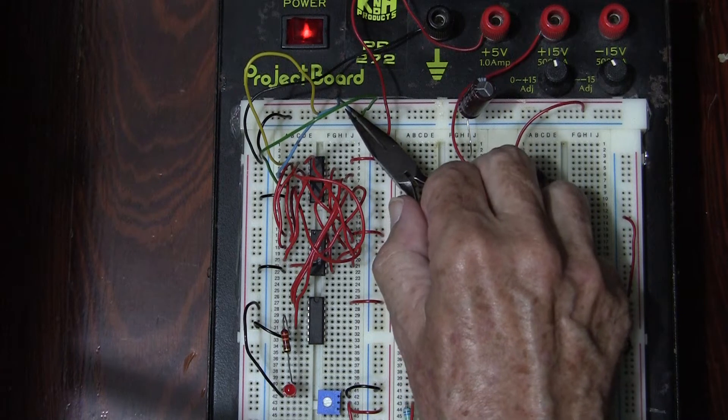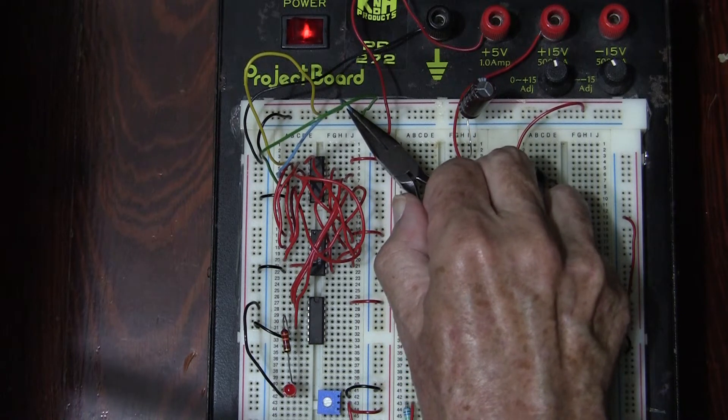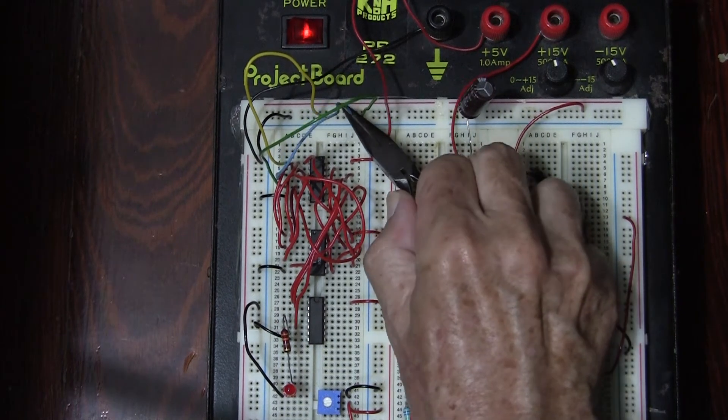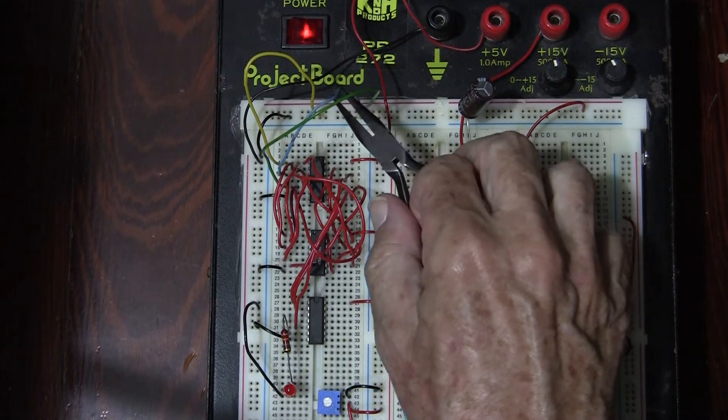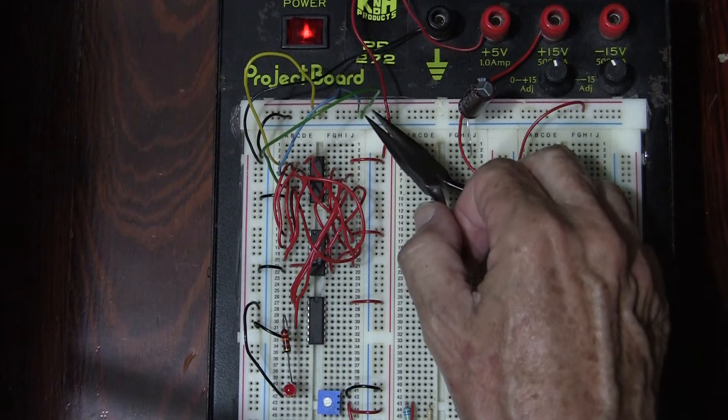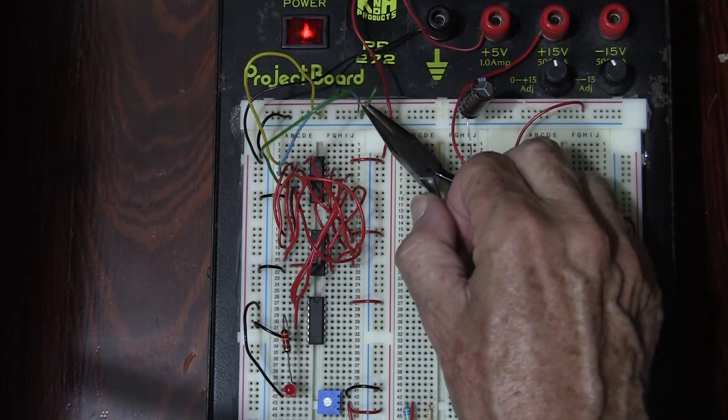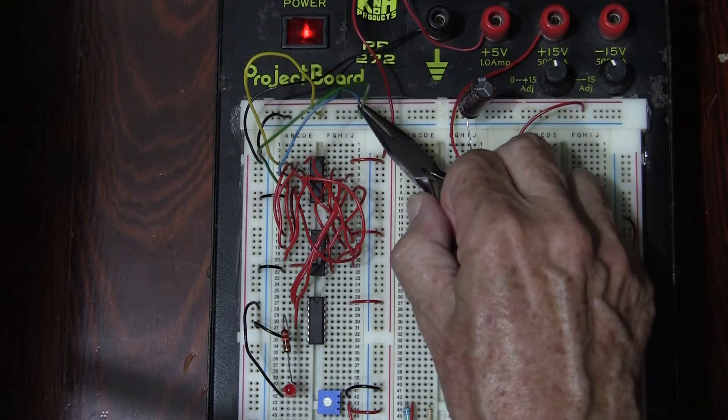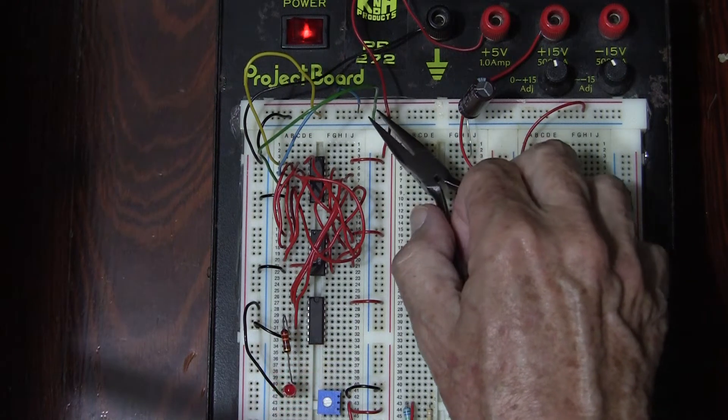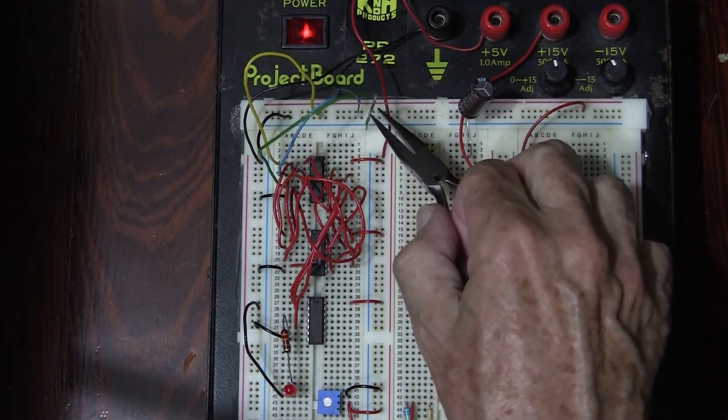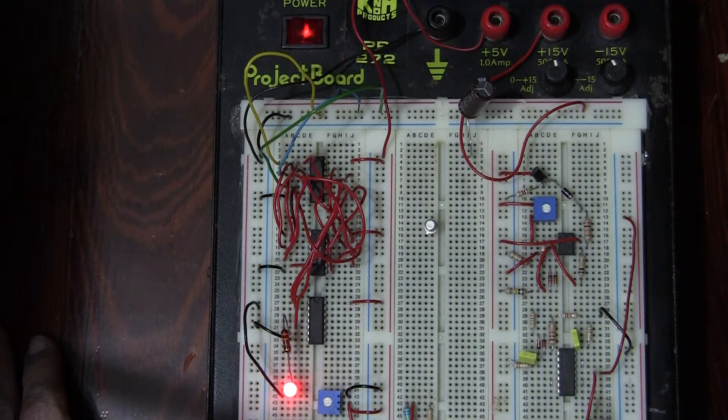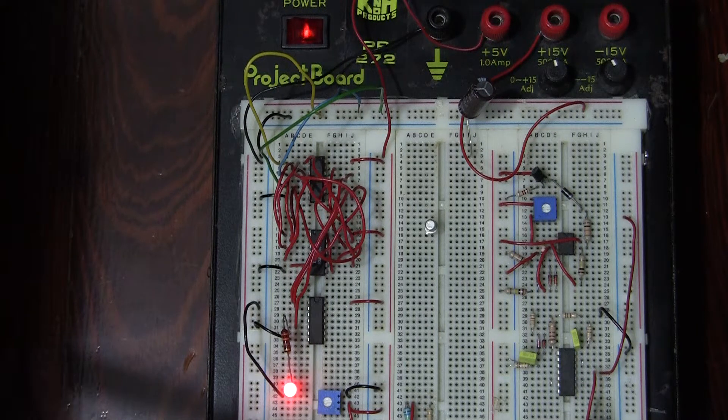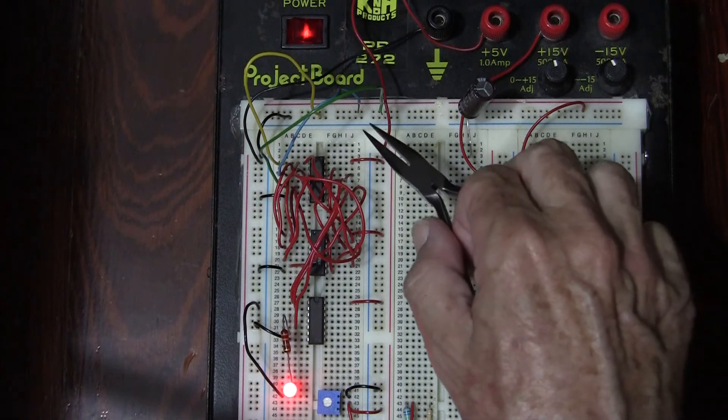We lift the B wire out of the circuit and the light still does not come on. Now we lift the B and C wire out of the circuit and the light comes on. That indicates that we have a 3. Okay, a 3. 0, 1, 1, 1 on the input.